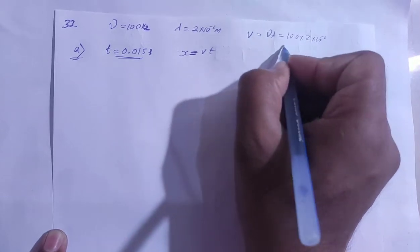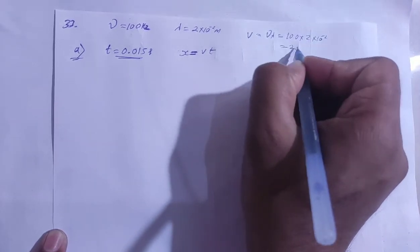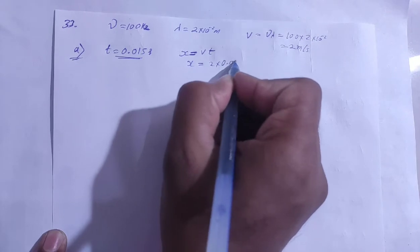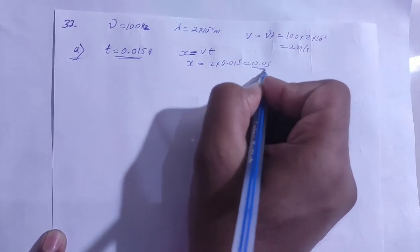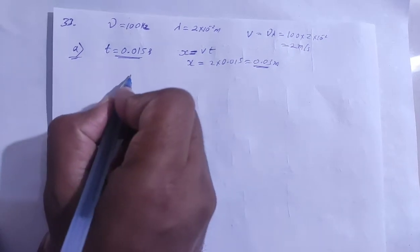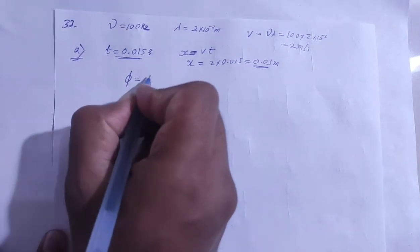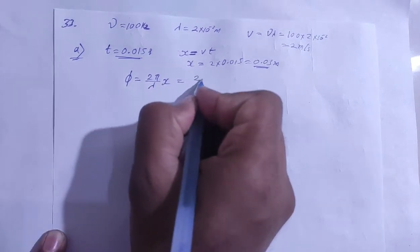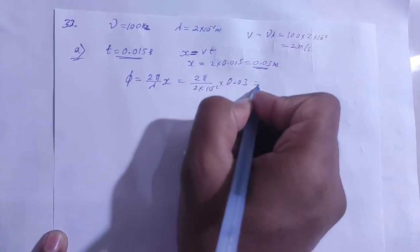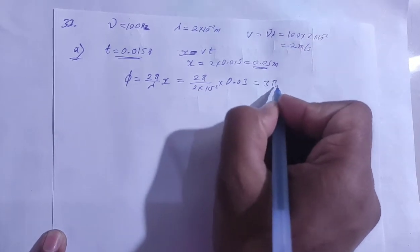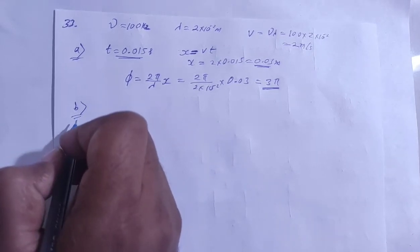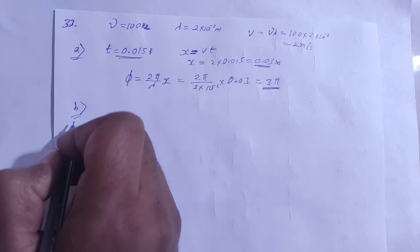Speed equals frequency into lambda: 2 into 10 squared = 200 m/s... wait, x equals v times t, so x equals 200 into 0.015 = 0.03 m path difference. Phase difference equals 2π divided by lambda, multiplied by path difference. Lambda is 2 cm = 2 into 10 power minus 2 m. Path difference is 0.03. Solving: phase difference equals 3π.